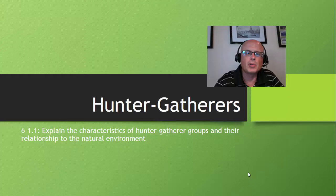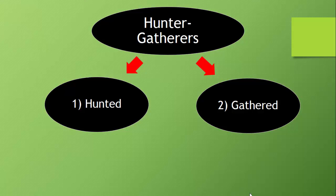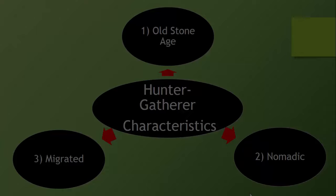So to begin with, what is a hunter-gatherer? Number one, they were people who hunted animals. And second, they gathered wild plants, seeds, fruits, and nuts in order to survive during what we call the Old Stone Age. That's why we call them hunters and gatherers — because they had to hunt and gather to survive.